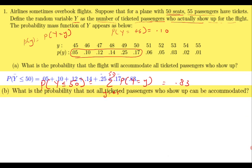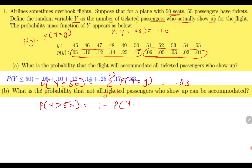The next part asks for the probability that not all ticketed passengers who show up can be accommodated. If more than 50 passengers show up, it is not possible to accommodate them all. So we need the probability that more than 50 show up. Either you add the remaining values directly, or you subtract what you already computed from 1, giving 0.17.